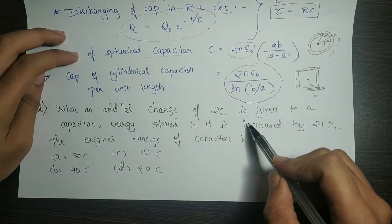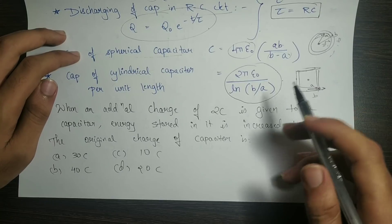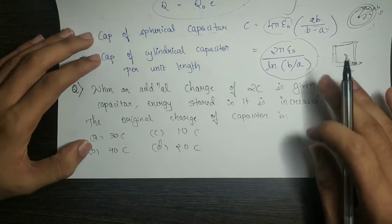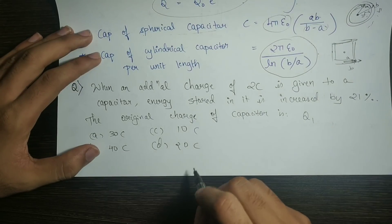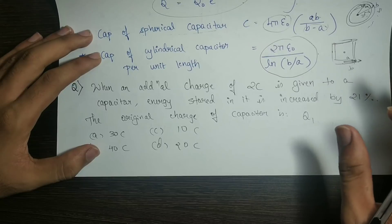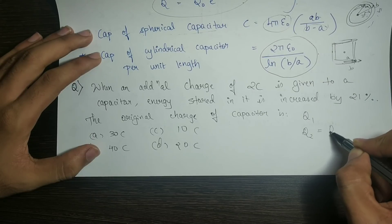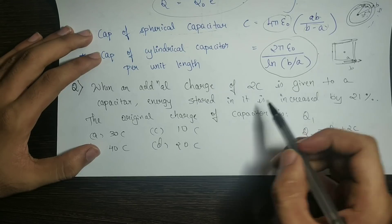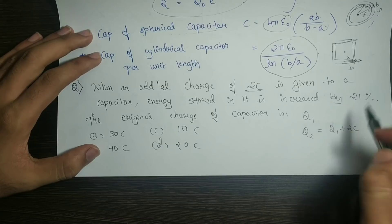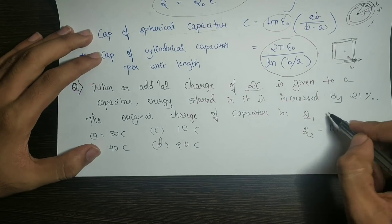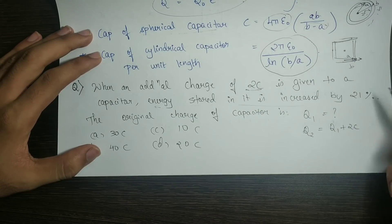When an additional charge of 2 coulombs is given to a capacitor, the energy stored increases by 21%. What is the original charge? We say initially the charge is Q₁. The final charge Q₂ equals Q₁ plus 2 coulombs, since 2 coulombs is added to the capacitor.